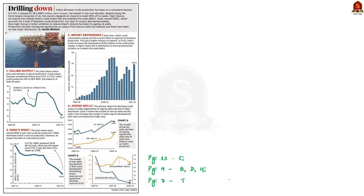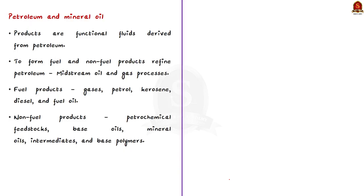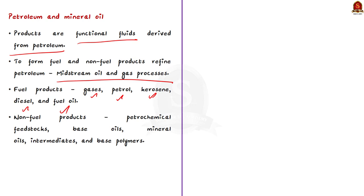Let us analyze the data point and see some important points useful for your mains examination. First, petroleum and mineral oil products are functional fluids derived from petroleum. To form fuel and non-fuel products, we have to refine petroleum using midstream oil and gas processes. Fuel products include gases, petrol, kerosene, diesel, and fuel oil. Non-fuel products include petrochemical feedstock, base oils, mineral oils, intermediaries, and base polymers.